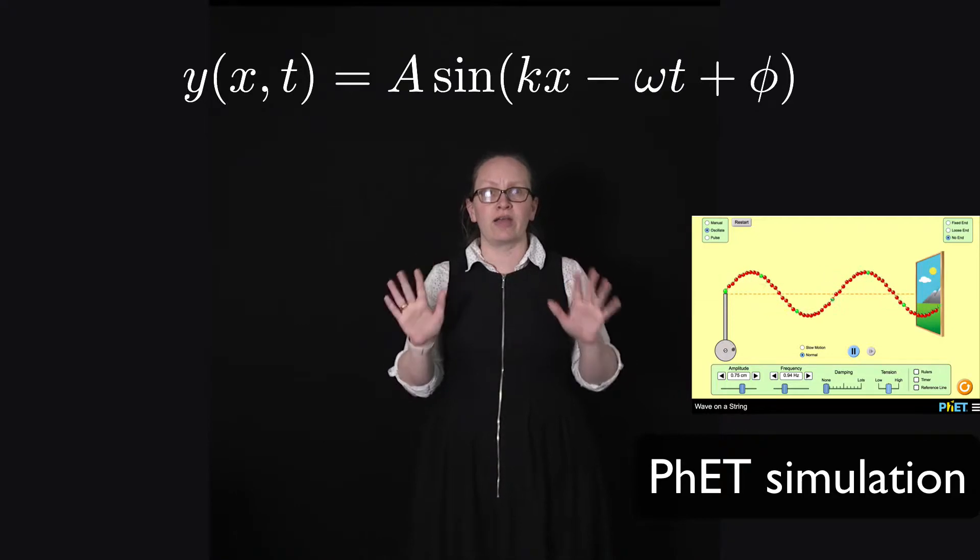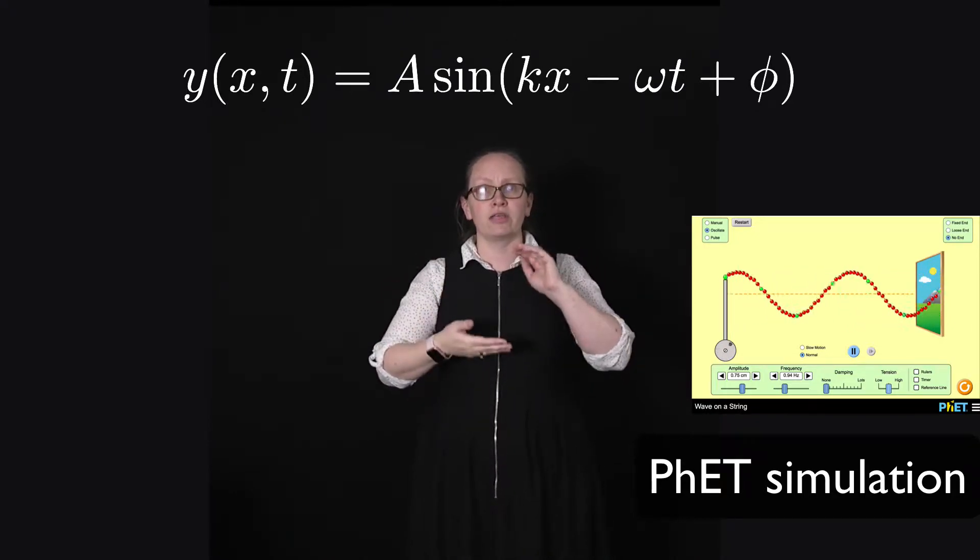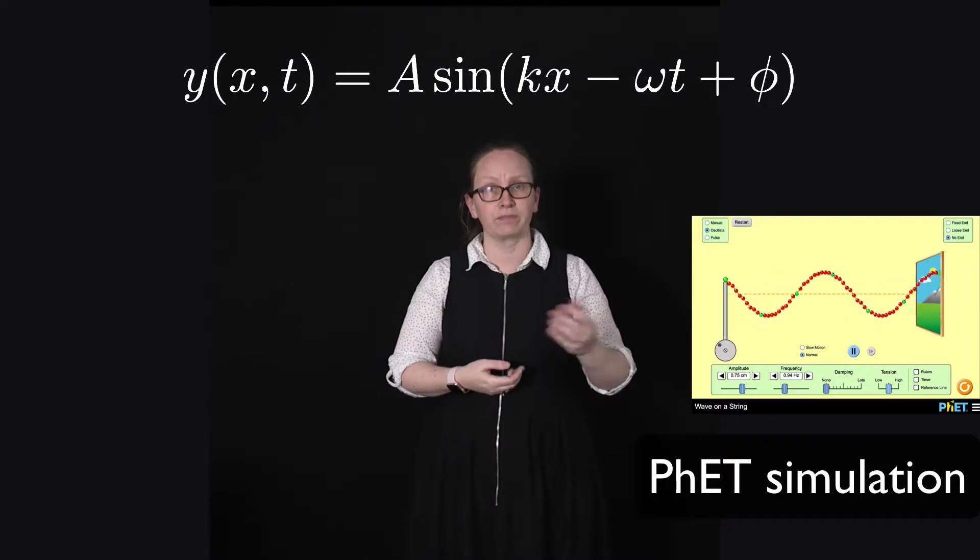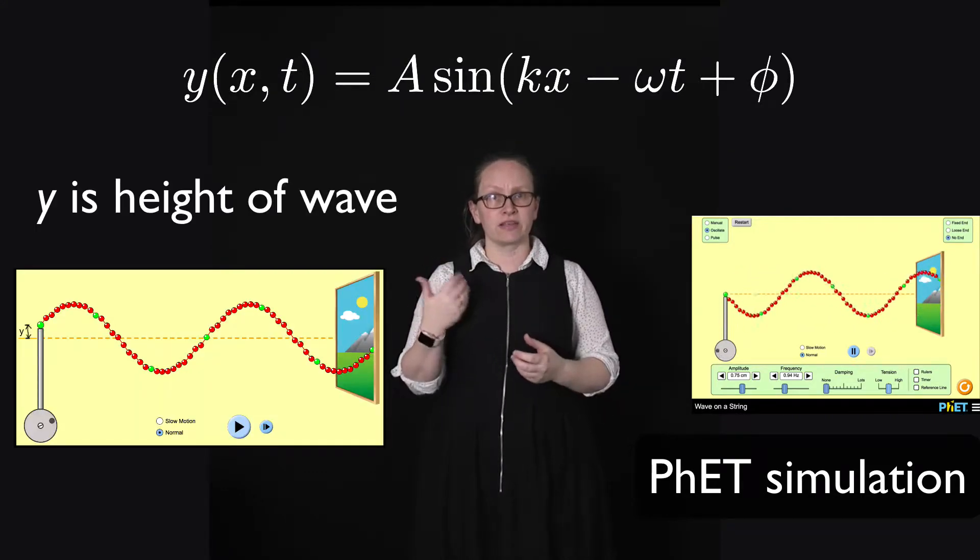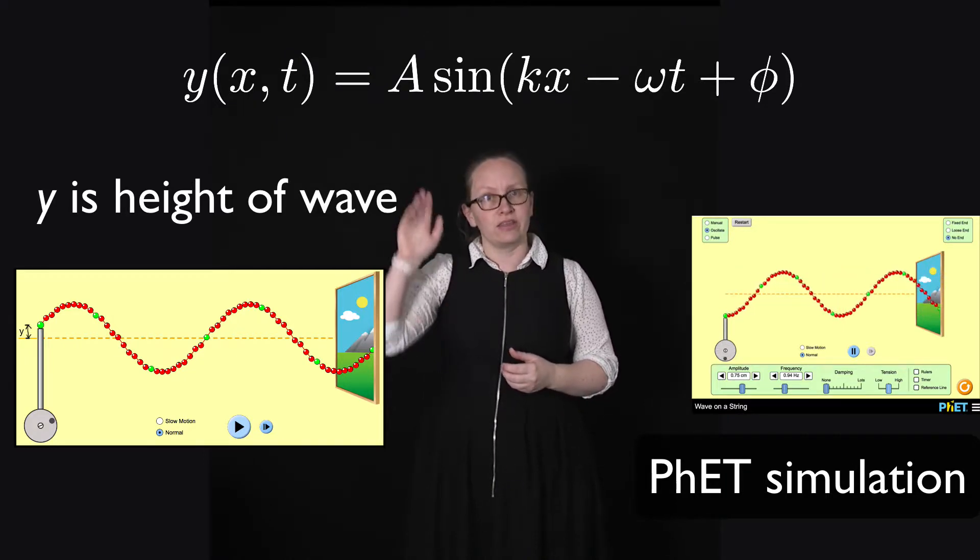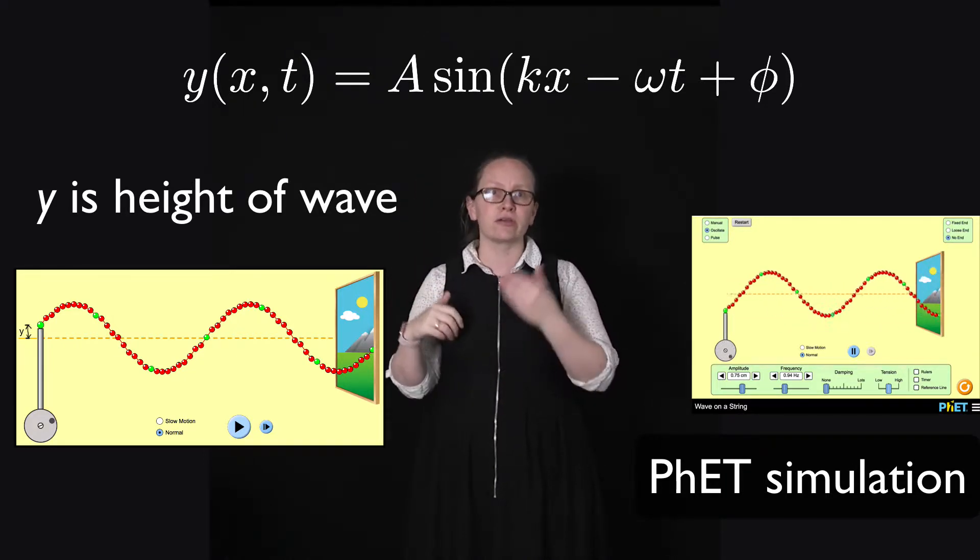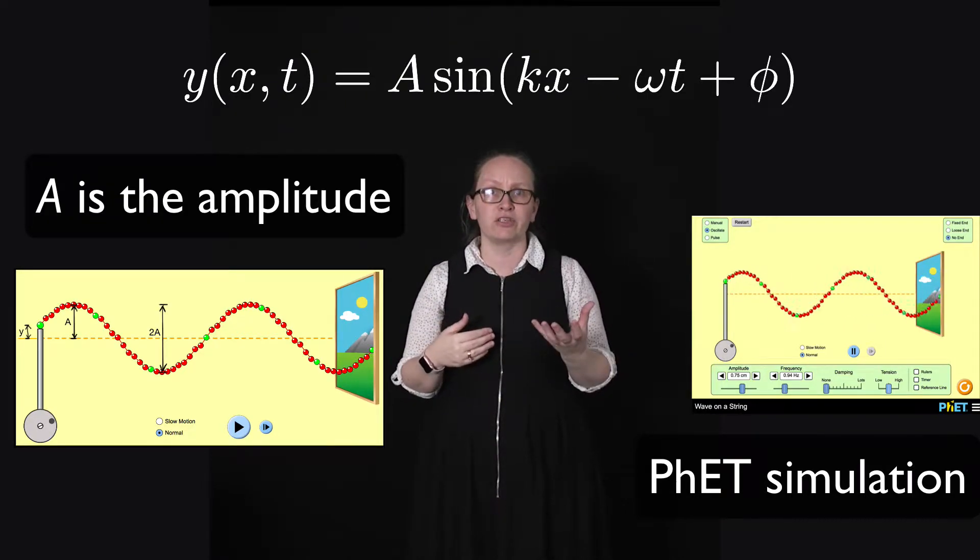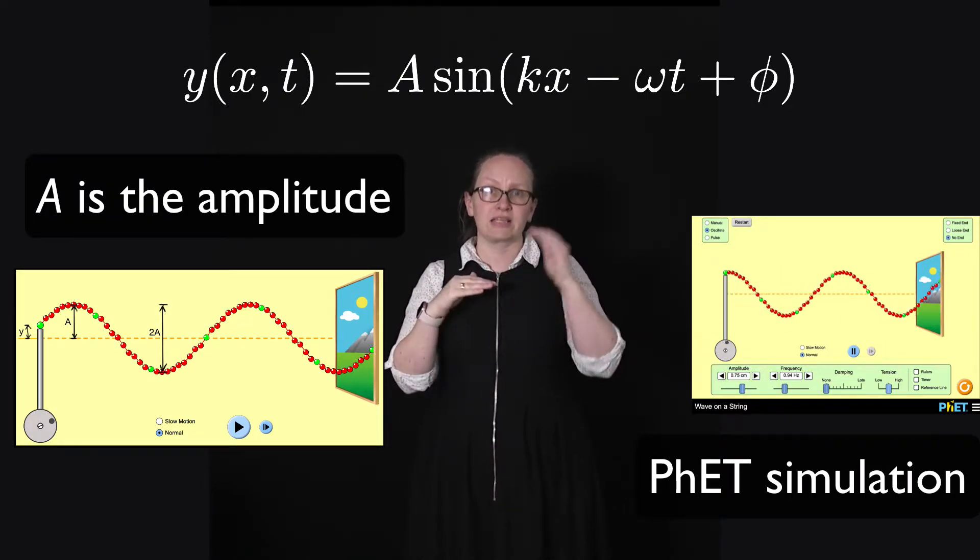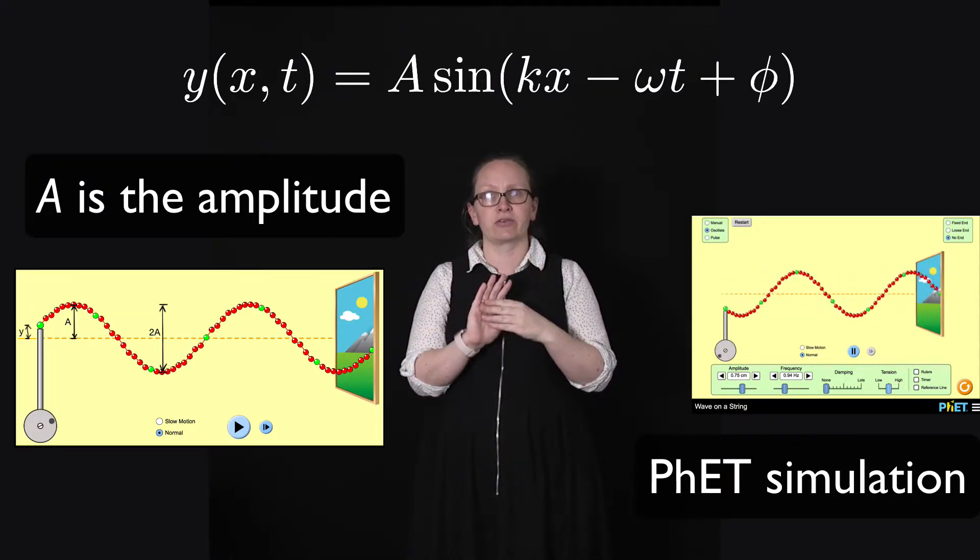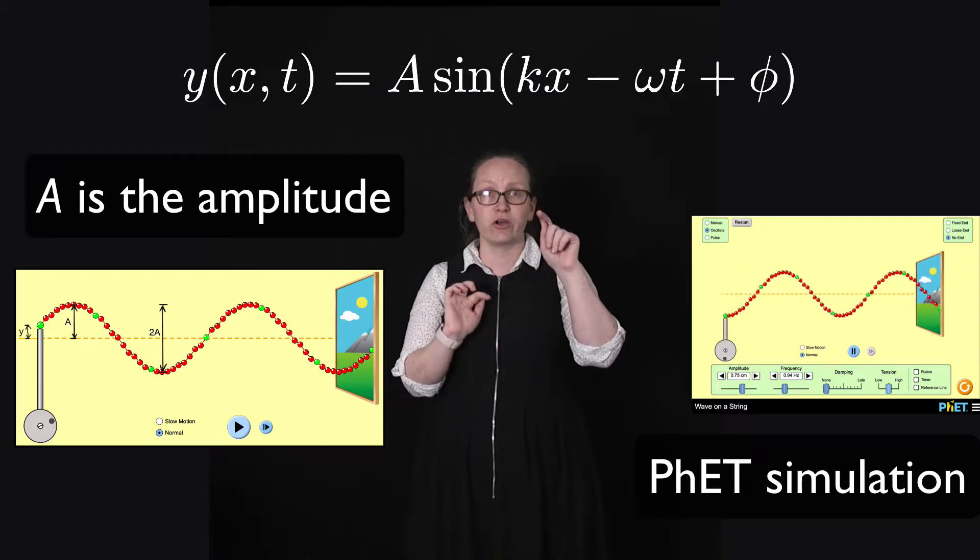So with our traveling wave, all the symbols that you see have the same meaning as before. So y, this tells us the height above the equilibrium position in the y direction, measured in meters. A, this is the amplitude of the wave, which is the maximum displacement from the equilibrium position and two times the amplitude is equal to the distance between the crest and the trough.